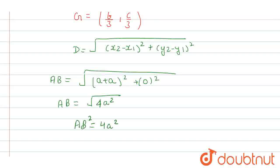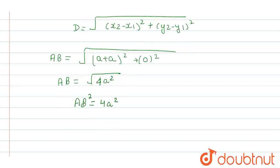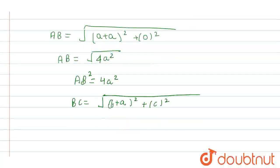Similarly, using the same concept, we will find the other side lengths. BC side length: B is (-a, 0) and C is (b, c), so BC = √((b + a)² + c²). Therefore BC² = (b + a)² + c².